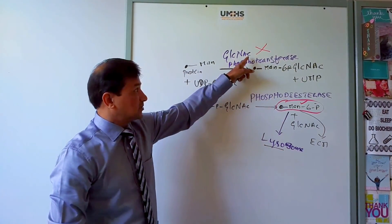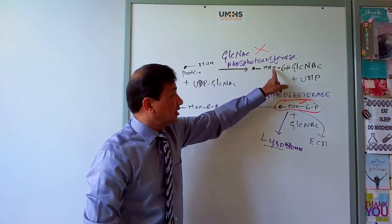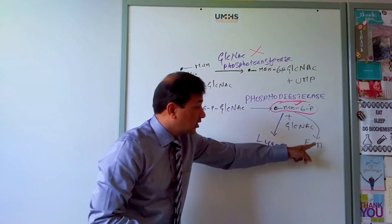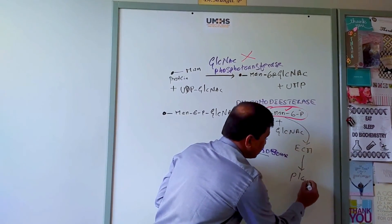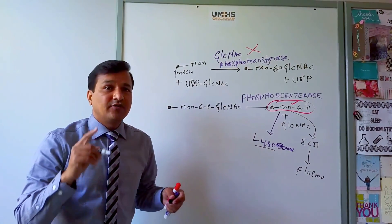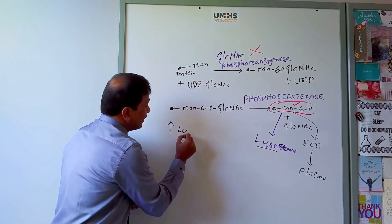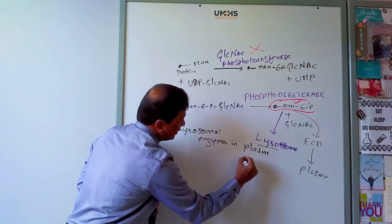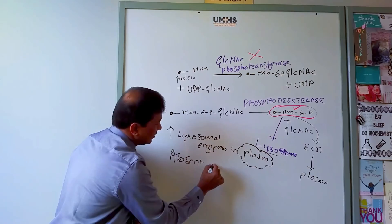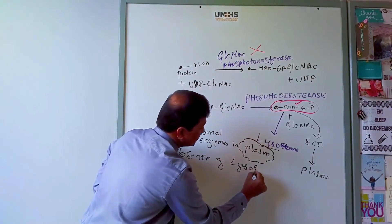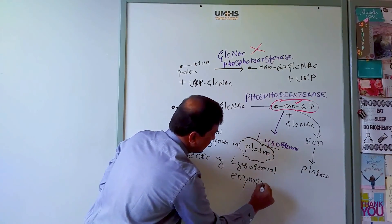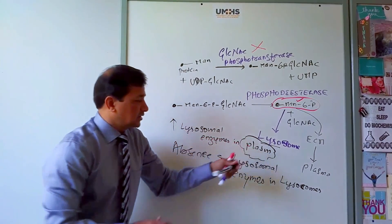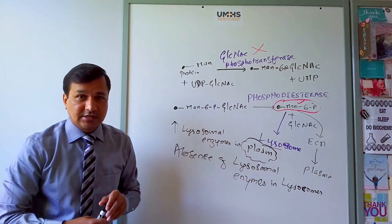In I-cell disease, GlcNAc phosphotransferase is defective and is not adding 6-phosphate at the 6th position of mannose, so by default these lysosomal enzymes go into the extracellular matrix and from there into the plasma. So in I-cell disease there is elevation of lysosomal enzymes in the plasma. Remember this: there is increase in lysosomal enzymes in the plasma and absence of lysosomal enzymes in the lysosomes. You don't have lysosomal enzymes in the lysosomes, but you have plenty of lysosomal enzymes in the plasma. This is one of the major laboratory signs seen in I-cell disease.